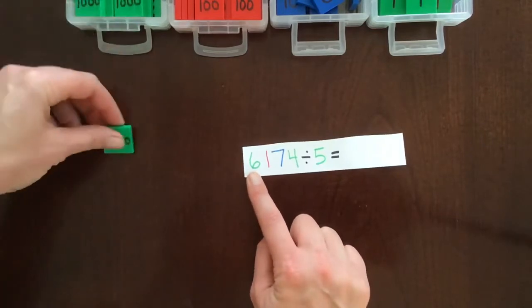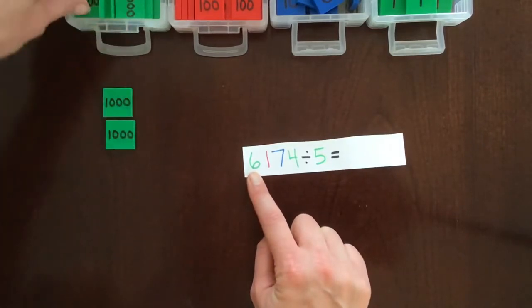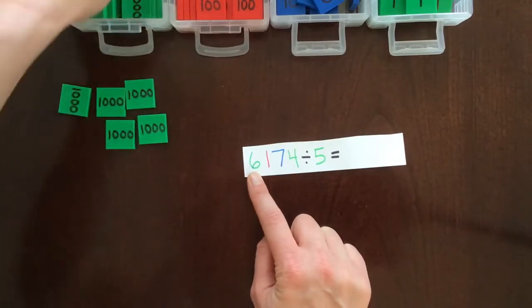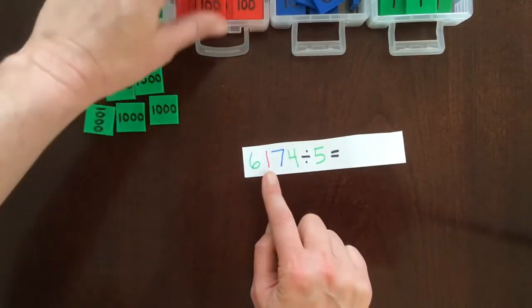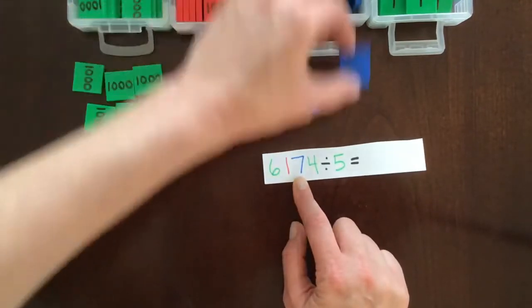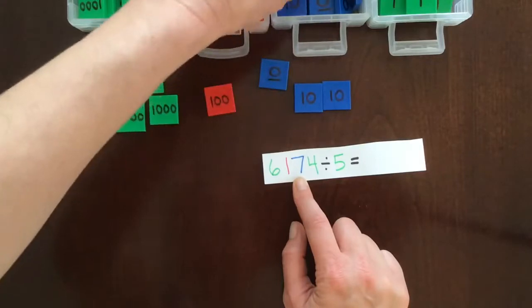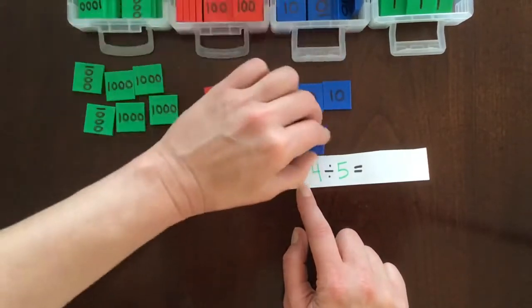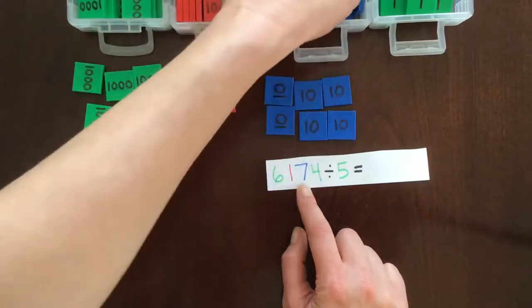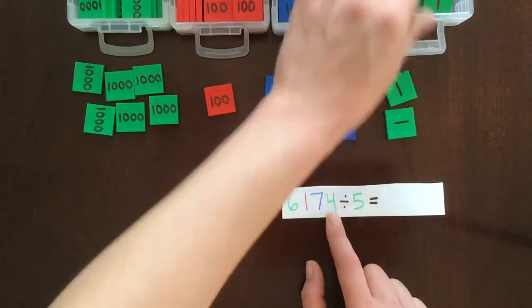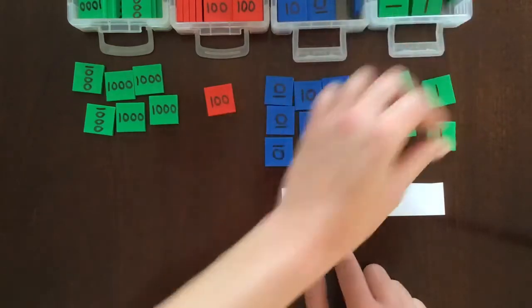So 6,000: 1, 2, 3, 4, 5, 6. 100: 7 tens: 1, 2, 3, 4, 5, 6, 7. And 4 ones: 1, 2, 3, 4.